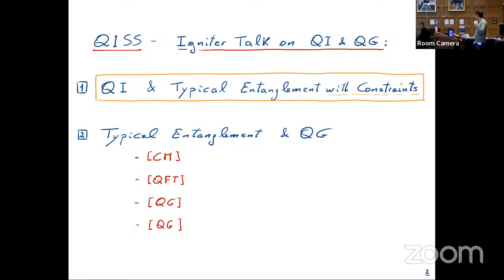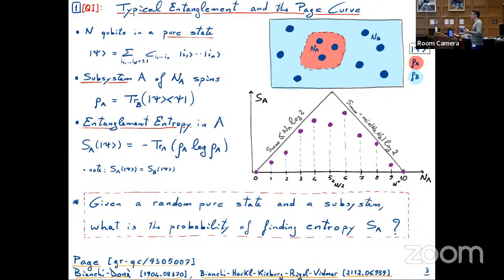I have two parts. The first part is really about quantum information — the ideas behind typical entanglement with constraints. Then it's used in quantum gravity, and I'm going to go through a number of steps and examples. Let me start with the quantum information part. This is something beautiful, and for those of you who are not already familiar with it, I would like to go through it slowly and then add the technical part of recent developments.